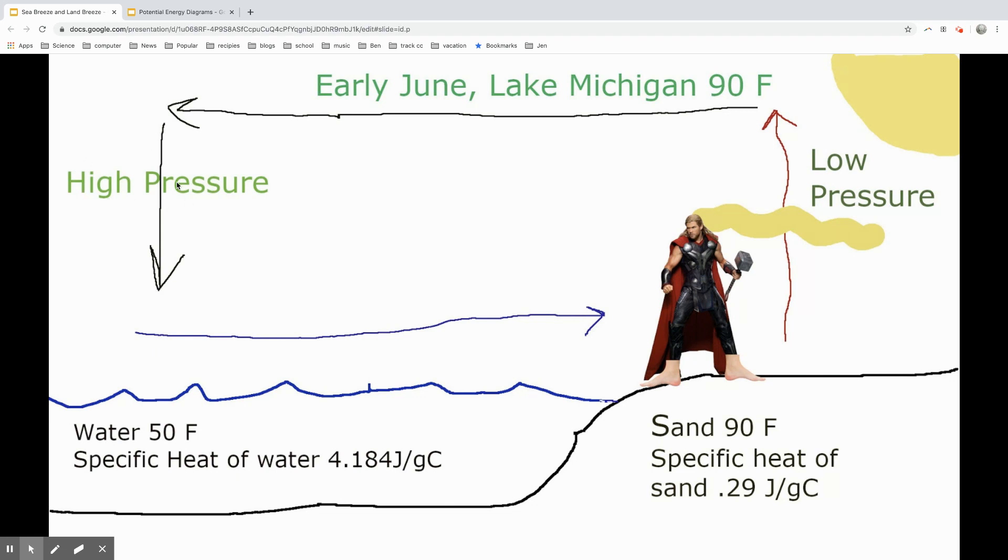This is going to be our high pressure system then in comparison. And Thor's flowing locks will be flying back behind them. And that's why you've noticed whenever you've gone to Lake Michigan in the early summer, it's crazy windy. It's all due to those differences in specific heats.